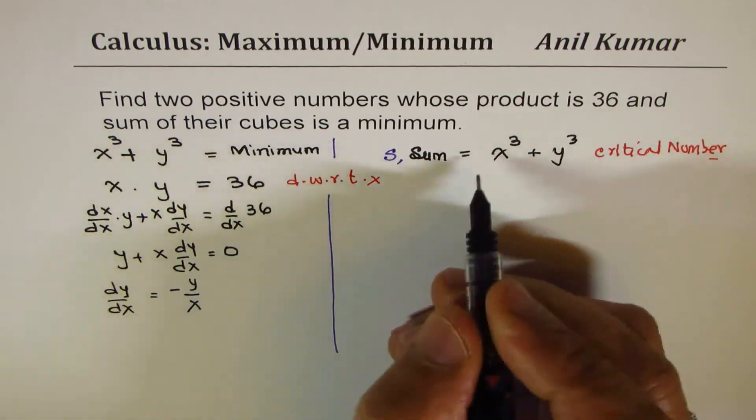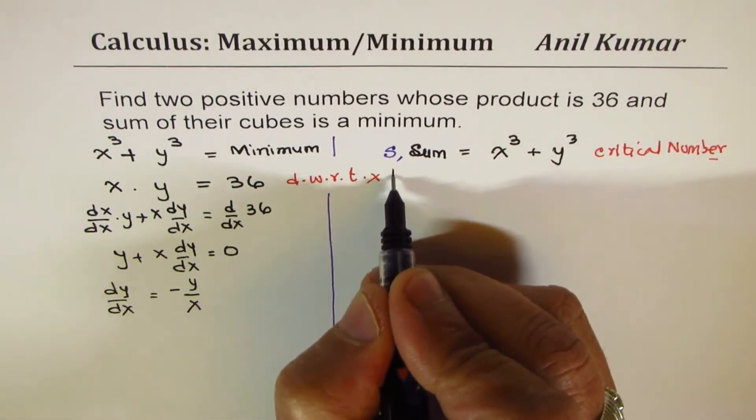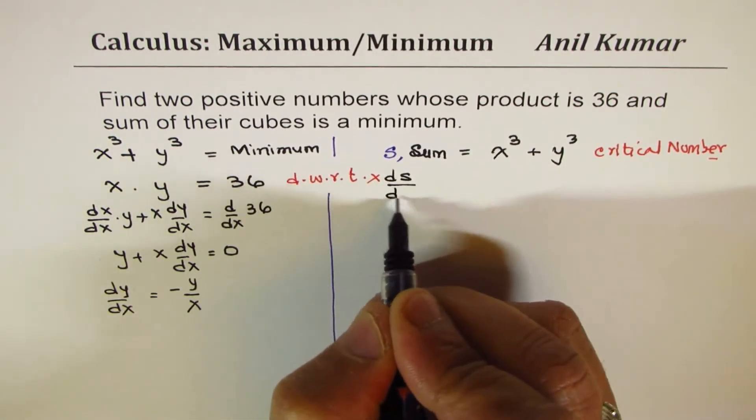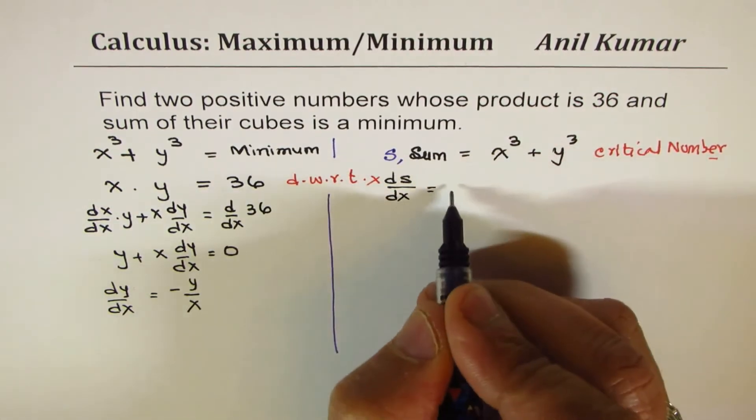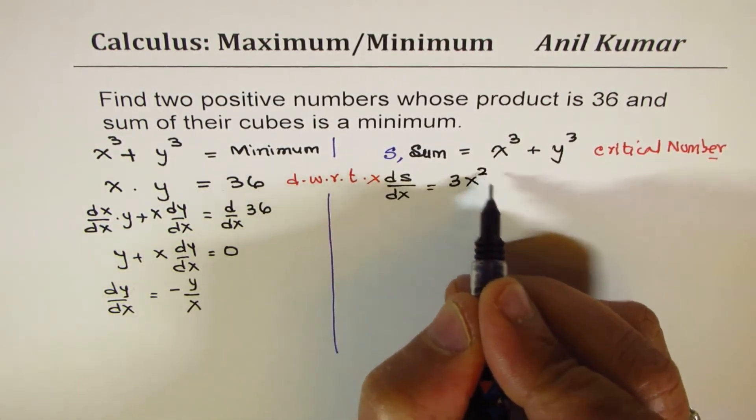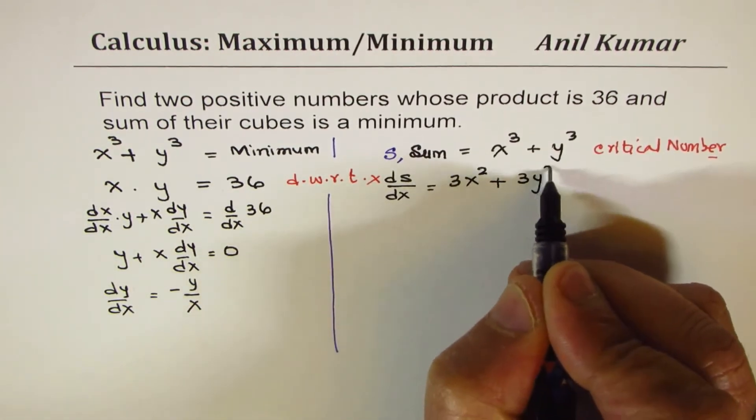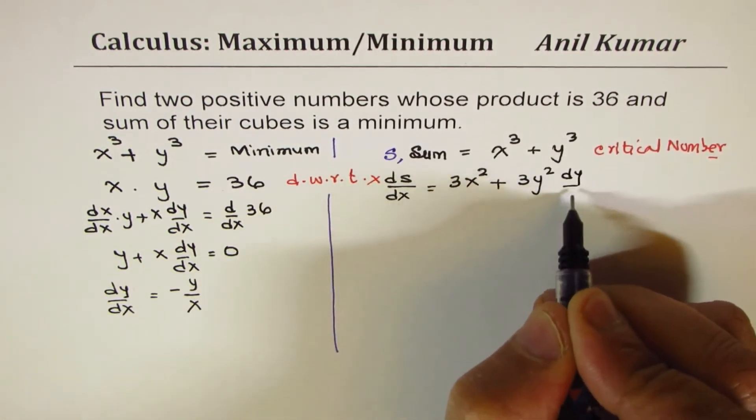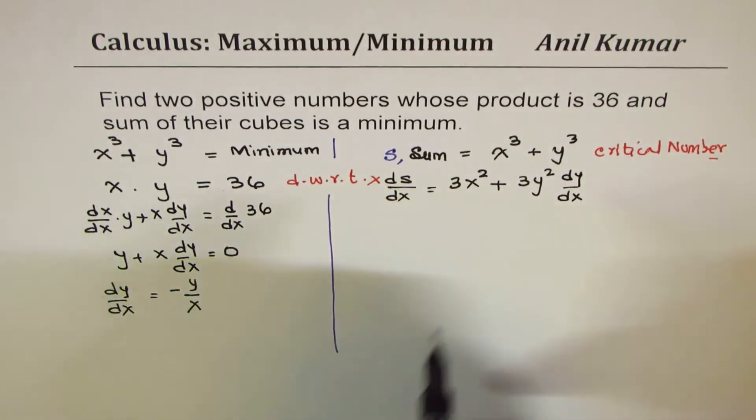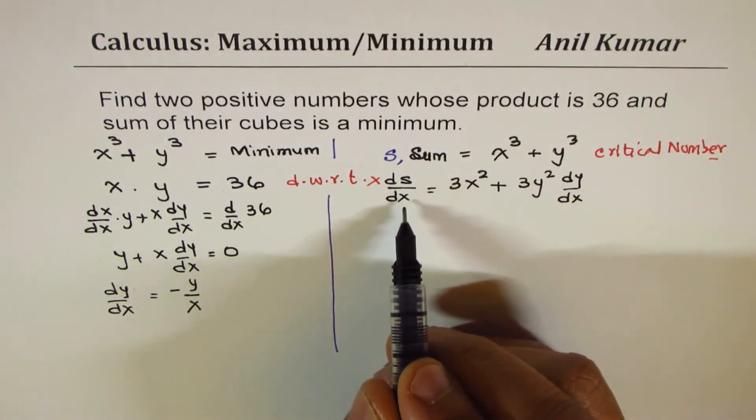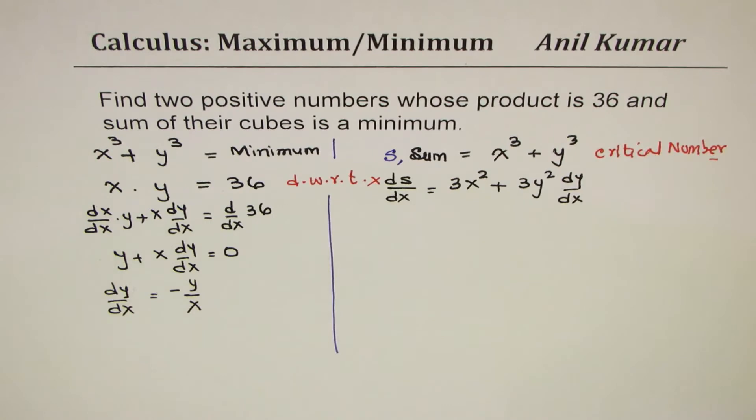Again differentiating with respect to x, let's call this variable as sum. Then what do we get? We get ds/dx equals, when you take the derivative, this becomes 3x² and here we get 3y² dy/dx.